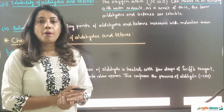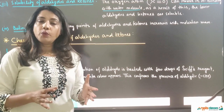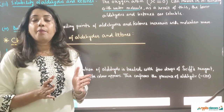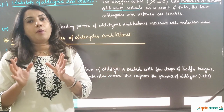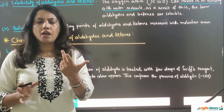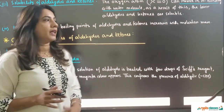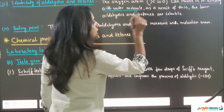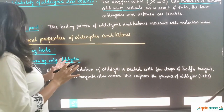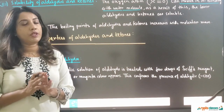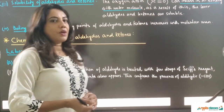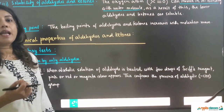The next physical property is boiling points. Boiling points are directly proportional to molecular mass and also depend on the surface area of the molecule. So boiling points of aldehydes and ketones increase with molecular mass. These are the four physical properties we need to know. Now we will start with the chemical properties — specifically the laboratory tests for aldehydes and ketones.